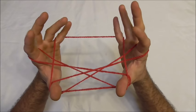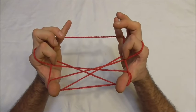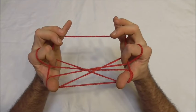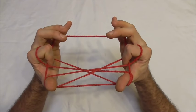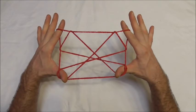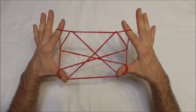Then we want to use our pointer fingers to go over the palm strings and into those little triangles, and then we want to drop our little fingers and rotate the hands forwards. We should end up with a shape like this.